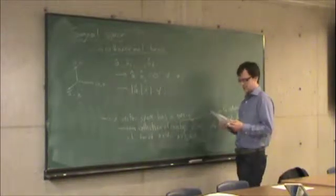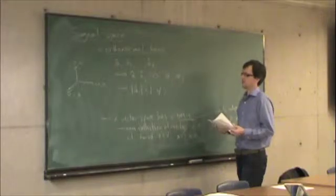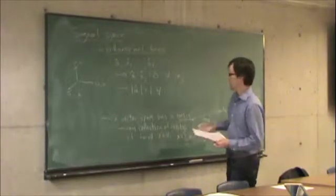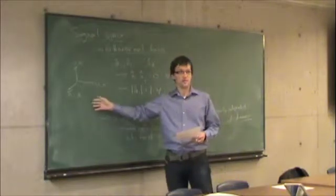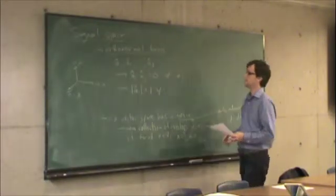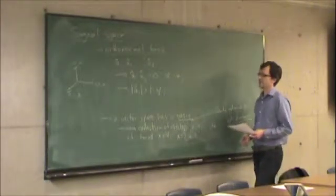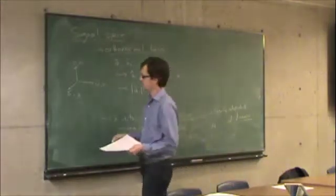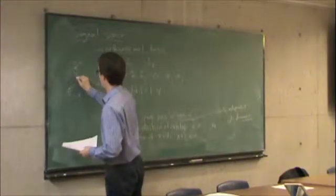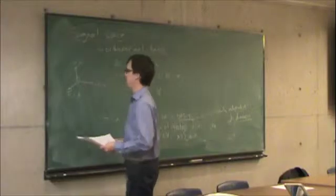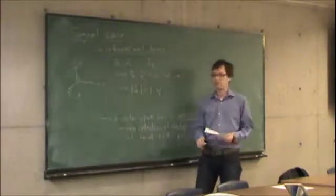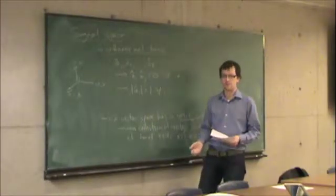And last time, so again, I'm going through this very quickly because it should be review from last time. We talked about the example of the Cartesian vector space, which looks like this. All these three basis vectors are all orthogonal to each other and they're all obviously of length 1.